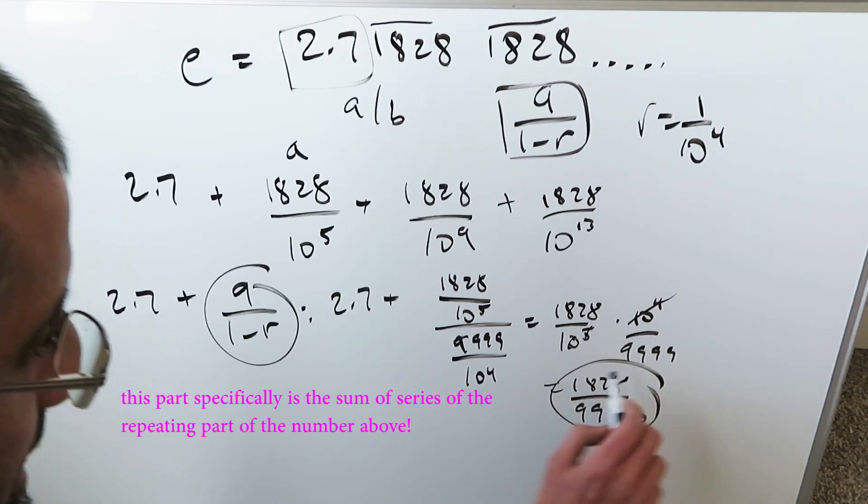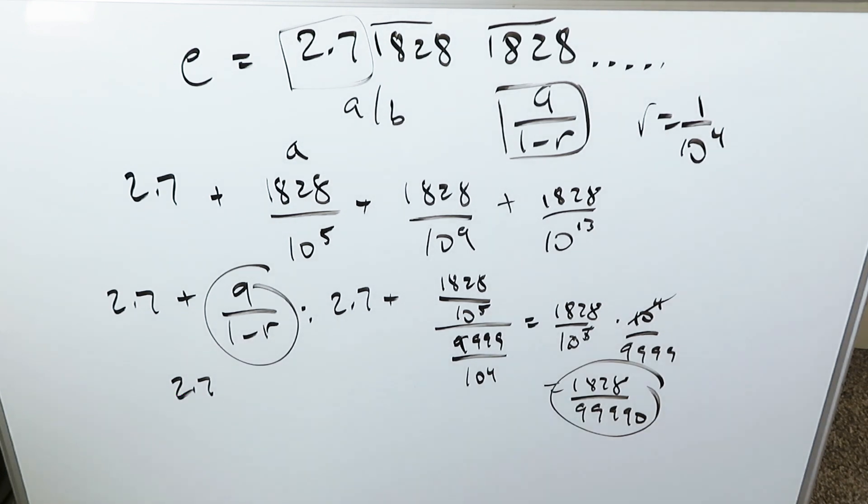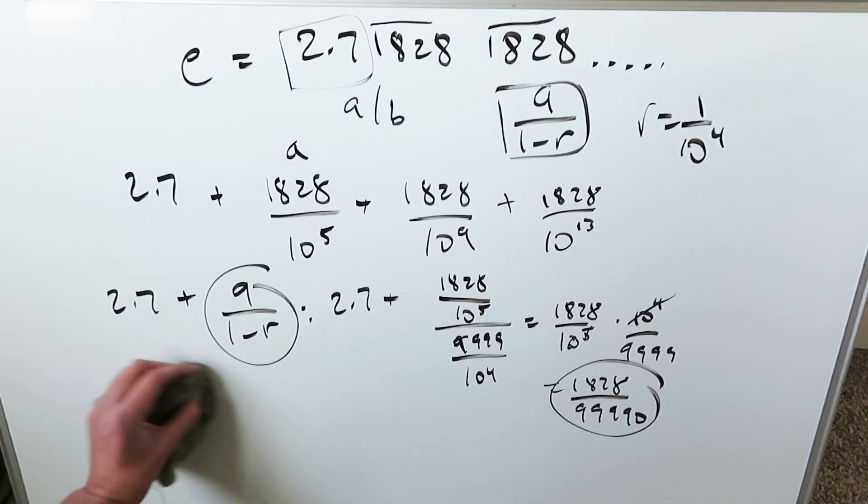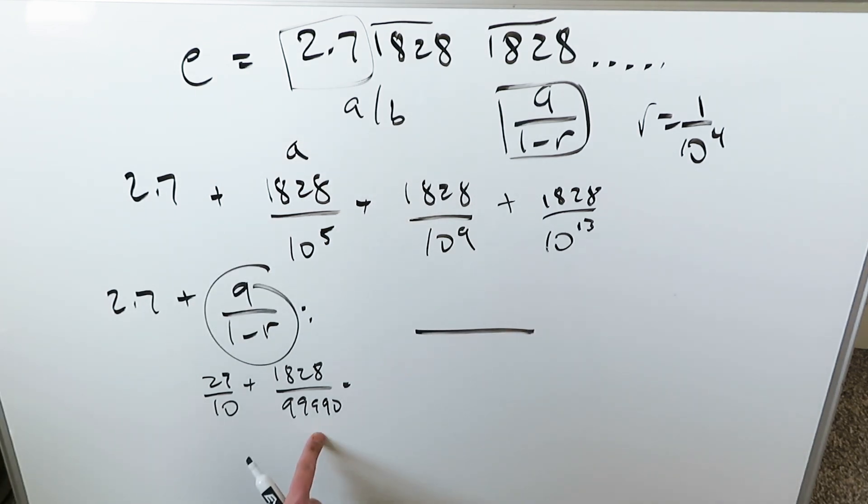All of this part will now add to this. I'll have 2.7, which you will write now in terms of fractions. What's 2.7? It's 27 divided by 10 plus this: 1828 divided by 99,990. You do this fraction over here, you'll get your answer a over b. We have a common denominator, it's this: